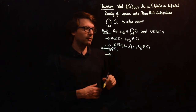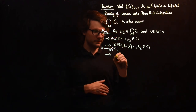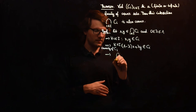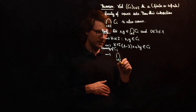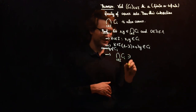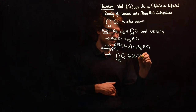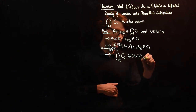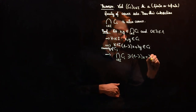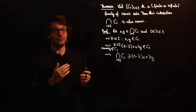Now we can go back to the intersection. Since (1 - lambda)x + lambda*y lies in C_i for all i, the intersection also contains this element. And this concludes our proof.